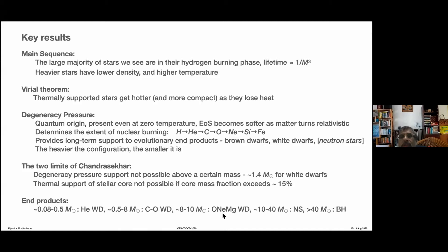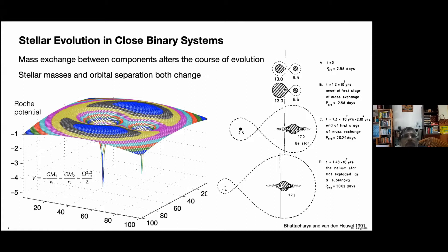We have this whole variety of stellar end products generated at the end of stellar evolution. This meeting mainly concerns itself with the stage where the role of QCD becomes important. This is what we get from typical evolutionary theory of single stars as a function of mass. But as it happens, most stars are not born single — they are in binary systems, and stellar evolution in close binary systems can significantly alter the course of evolution we have just stated.